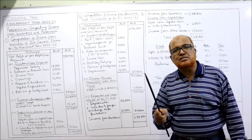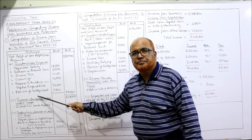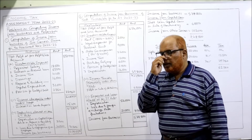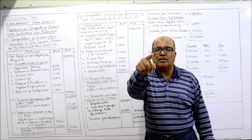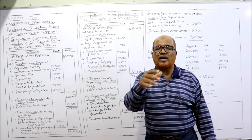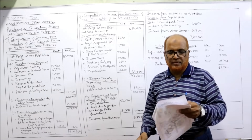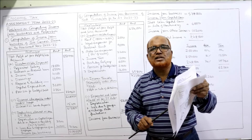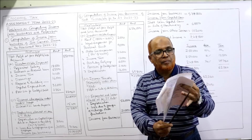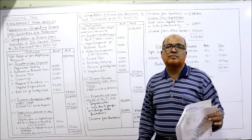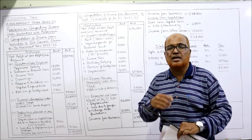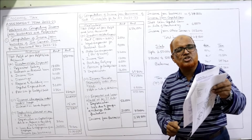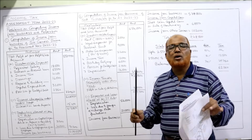Bad debts: remember, provision for doubtful debts is different from bad debts. Provision for doubtful debts is disallowed, but bad debts are allowed as deduction, provided the assessee has satisfied the conditions given by the Income Tax Act. Since nothing specific is stated, we assume the conditions are satisfied — bad debts allowed, nothing to be done. Provision for doubtful debts — disallowed. Depreciation: in the adjustment it is given that depreciation allowed as per IT rules is 56,000, so depreciation debited to P&L — 16,000 — is disallowed and will be replaced by IT depreciation later.